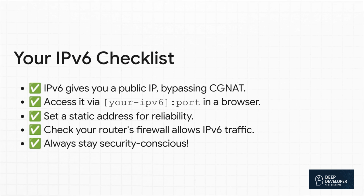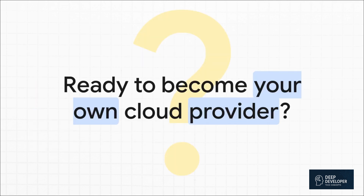Let's do a quick recap. That CGNAT thing on IPv4 is what's blocking you. But IPv6 gives you a free, public IP to get around it. You find your address with a simple command, you access it using those square brackets, and you make it permanent by setting a static address. Just make sure your router's firewall isn't blocking the traffic, and always be smart about security. IPv6 isn't just a technical update — it's really a shift in power. It gives you back the direct, unfiltered connection to the internet that things like CGNAT took away. It's your personal shortcut to host whatever you want, right from your own desk. So really, the only question left is: what are you going to build?